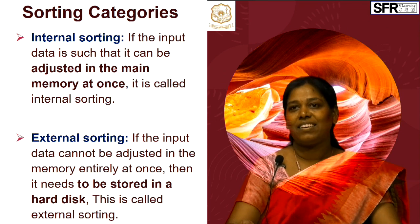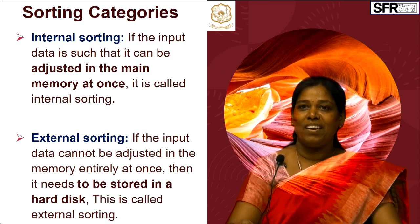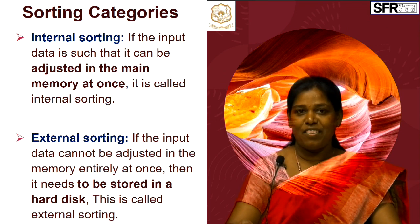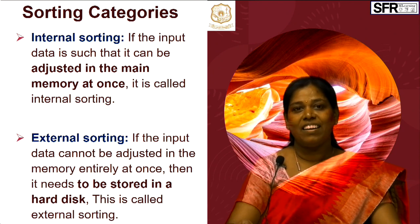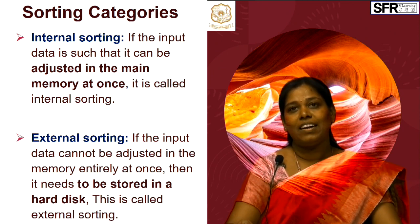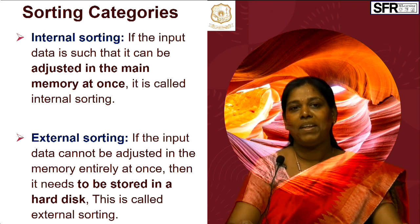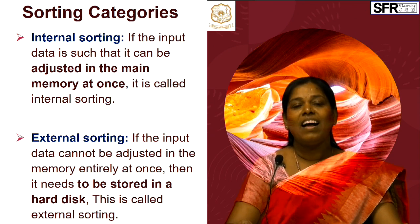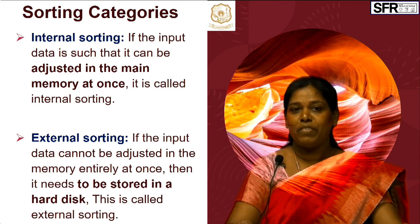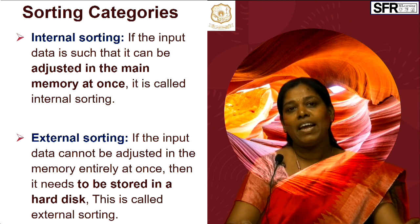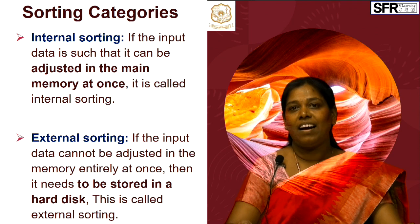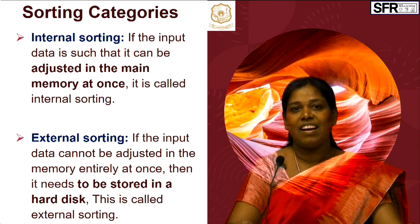There are two categories of sorting. One is internal sorting, another one is external sorting. In internal sorting, all the data to be sorted should be kept inside the main memory. In external sorting, if the data is highly voluminous, the memory cannot hold all the data at once, so it has to be stored in the hard disk. This is called external sorting.